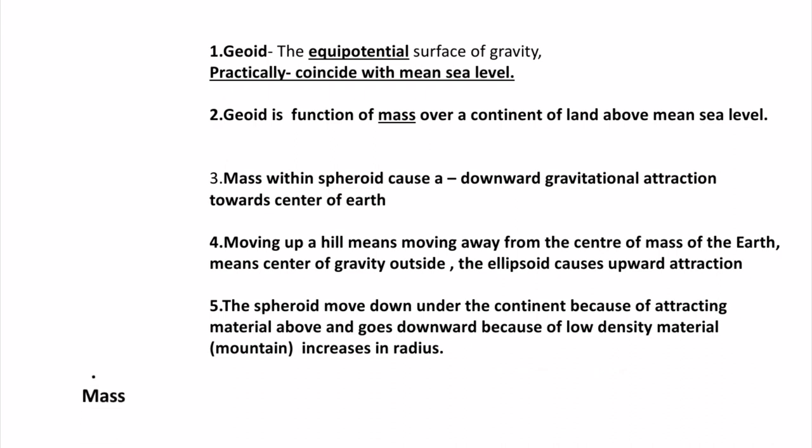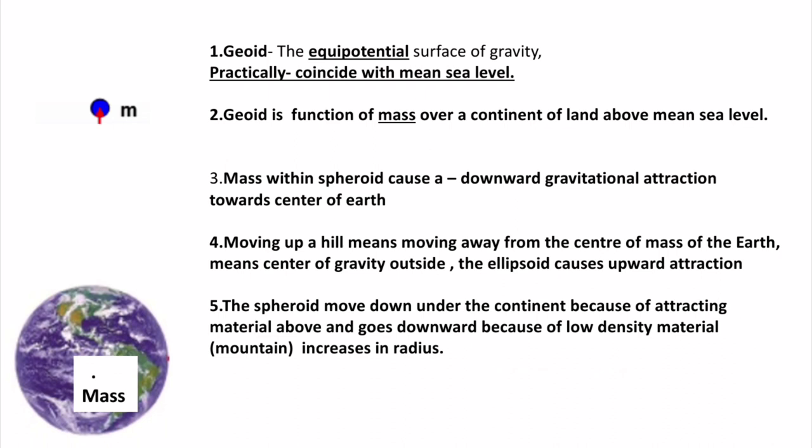To explain the diagram: this is Earth with mass M. If a body is placed upon it, it will experience gravitational acceleration equal to g. This red-colored mountain is at a certain height. The mass within the spheroid causes the body to be attracted toward the center of Earth, while the hill being at a height goes outside and causes an upward gravitational attraction relative to the ellipsoid, which is the reference spheroid.